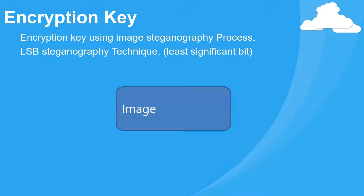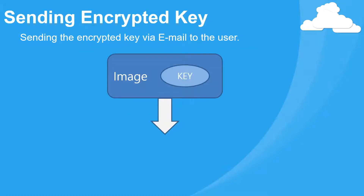In this video we will talk about the encryption of the key using image steganography process, and the technique which we are going to use is least significant bit. The key will be encrypted into the image and the image will be sent to the email of the user.